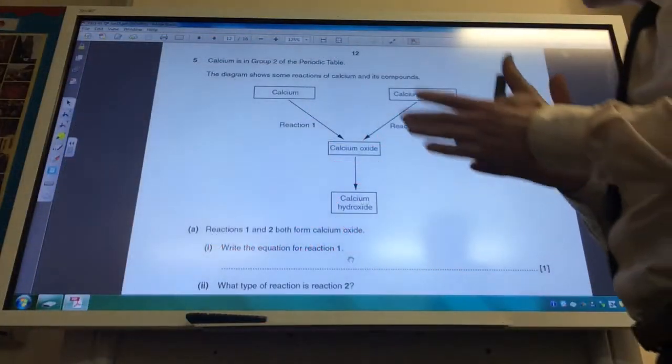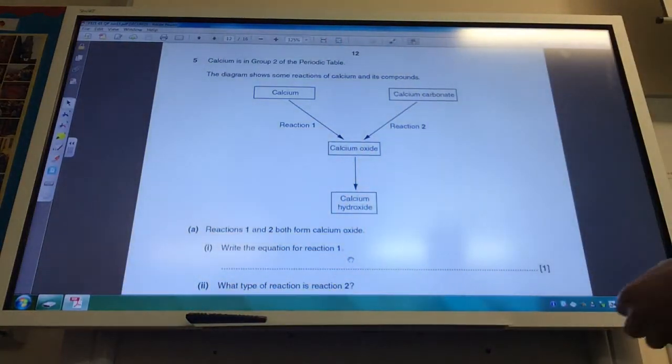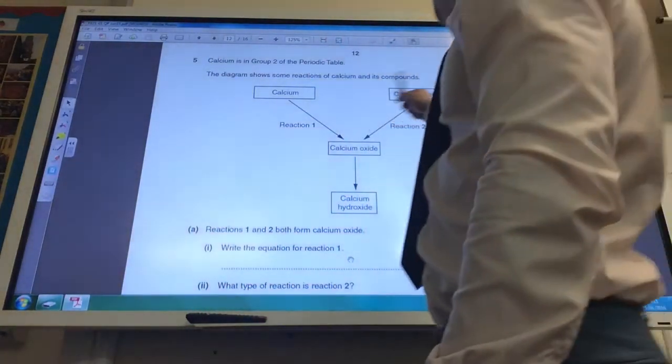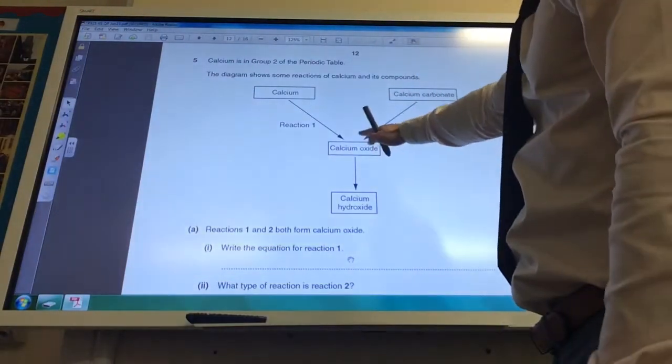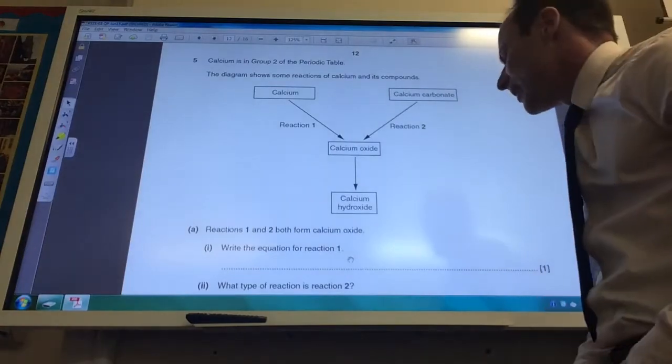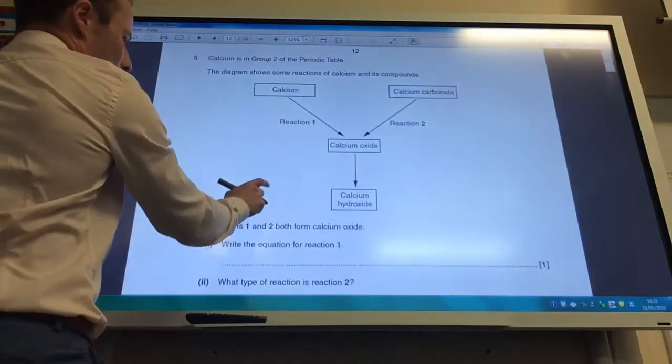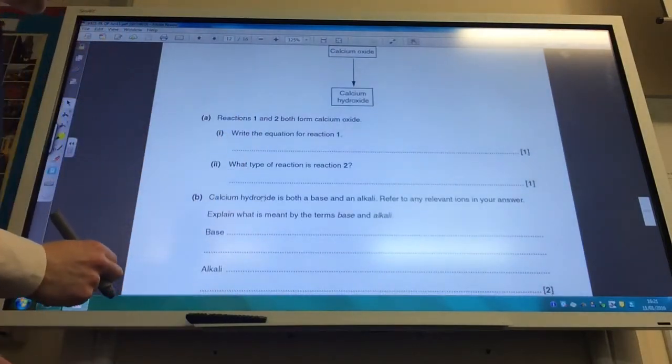Right, time to move on to question 5. So we've got some calcium chemistry now. So we've got reactions of calcium, calcium carbonate, both come into calcium oxide, and then calcium oxide being transformed into calcium hydroxide. So reactions 1 and 2 both form calcium oxide.